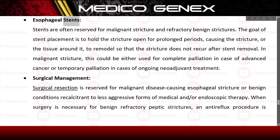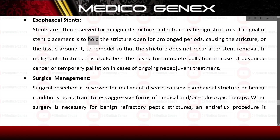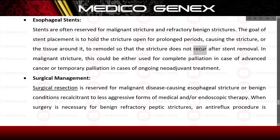Esophageal stents are often reserved for malignant stricture and refractory benign strictures. The goal of stent placement is to hold the stricture open for prolonged periods, causing the stricture or the tissue around it to remodel so that the stricture does not recur after stent removal.